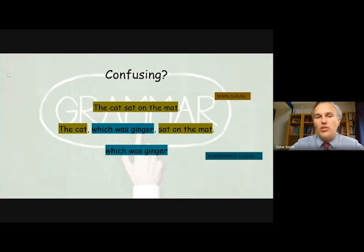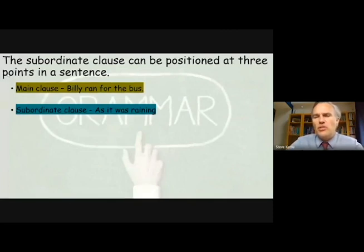So there's three different positions that you can put your subordinate clause. Let's take this case about Billy here and he's running for the bus. So subject is Billy, it's what the sentence is about, and what's he doing? He's running. So our verb there is the past tense and it's ran, and he's running for the bus. And the subordinate clause we're going to use here is 'as it was raining.' Now if you look at that subordinate clause, 'as it was raining,' it doesn't make sense on its own, does it? So that is the subordinate clause that we're going to use in this case.